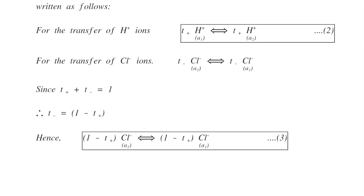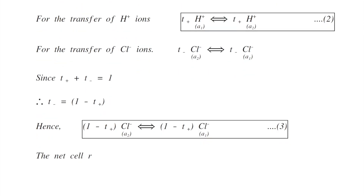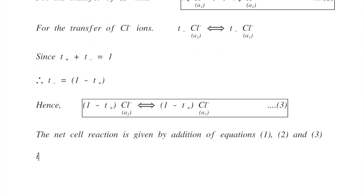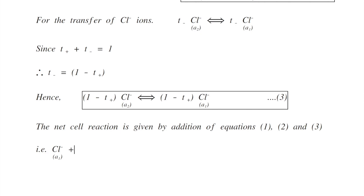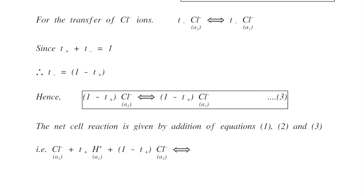This is equation number 3. As all processes are taking place simultaneously, the net cell reaction is given by the addition of equations 1, 2, and 3. Adding all of them: chloride ions of activity A1 plus T+ grams of H+ of activity A1 plus (1 − T+) grams of chloride ions of activity A2 are converted into chloride ions of activity A2 plus T+ grams of H+ of activity A2 plus (1 − T+) grams of chloride ions of activity A1.